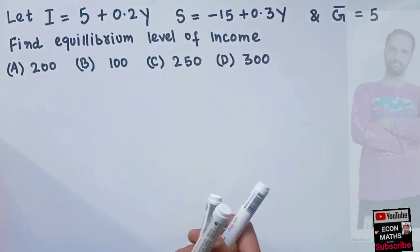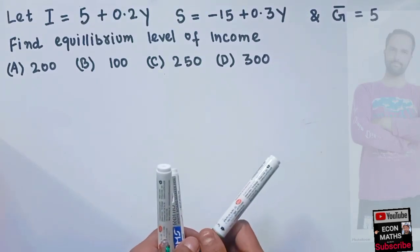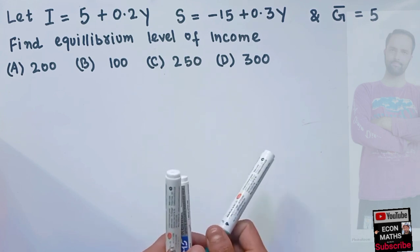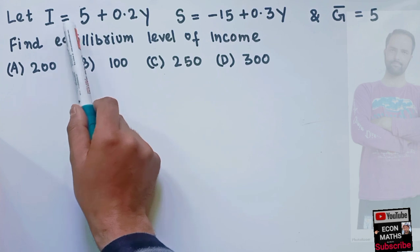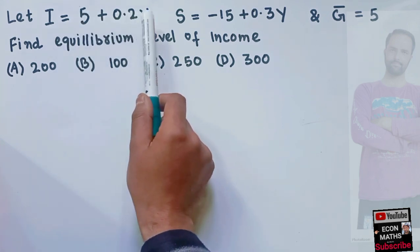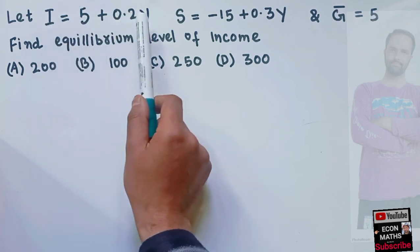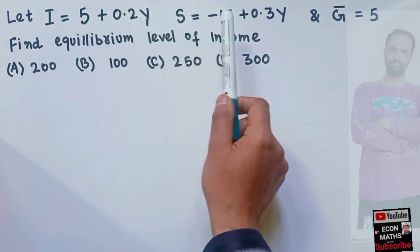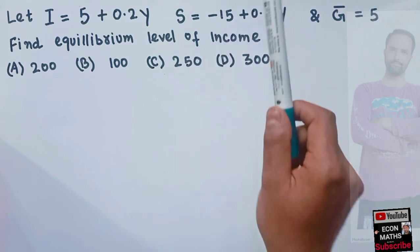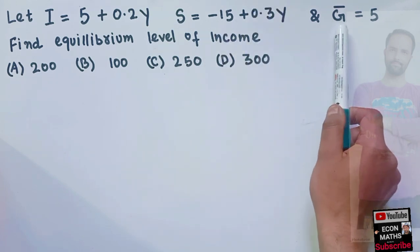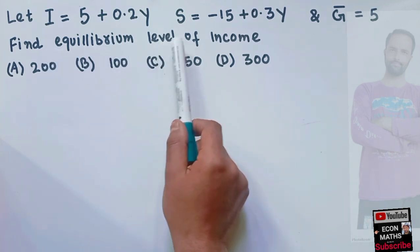In this video, we will learn how to find out the equilibrium level of income from the given investment function, savings function and government expenditure. The question is: let investment be equal to 5 plus 0.2Y, where Y denotes the income. That means investment is a positive function of income. Savings is equal to minus 15 plus 0.3Y. It is the positive function of income, and government expenditure is autonomous. We need to find out the equilibrium level of income.